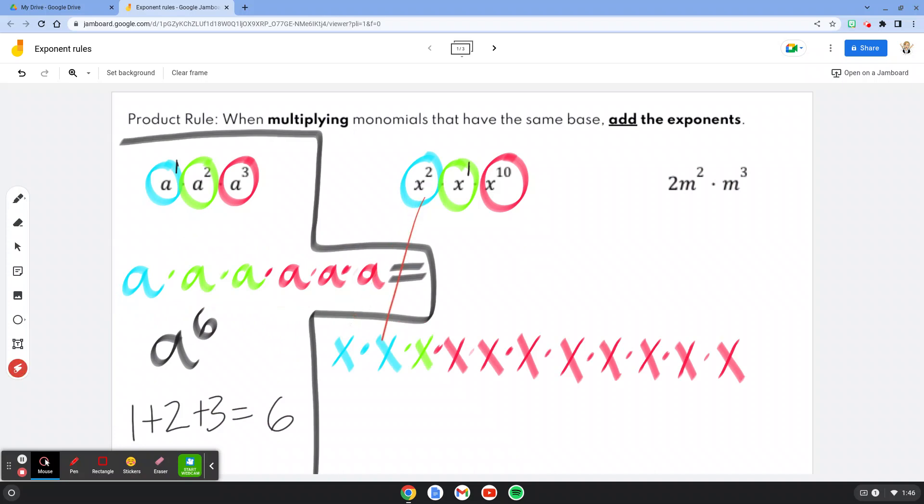So our x squared, we've got two x's down here, x to the first power, and then all of this is x to the tenth power, which takes a long time to write out. That's why we're going to use our shortcut for adding the exponents in order to figure out what our new exponent is going to be. So I've got 2 plus 1 plus 10, which is also what I have down here, when I'm trying to find out how many x's there are.